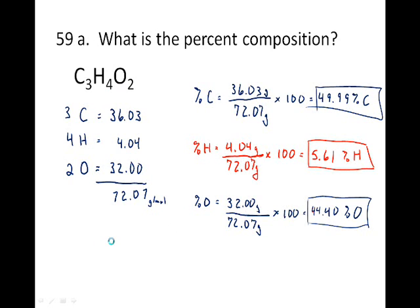Number 59 is about percent composition. You probably remember that to find percent composition, we find the percentage of each of the elements in the compound. We find the molar mass and then divide, in this case, molar mass 72.07. We divide the total mass of the carbon by the molar mass and gives us 49.99. The total mass of hydrogen divided by the molar mass gives us the percent composition of hydrogen, and we do the same thing for oxygen.